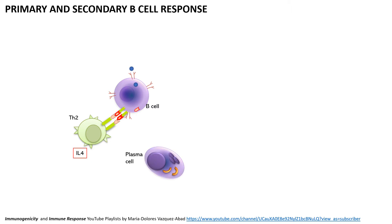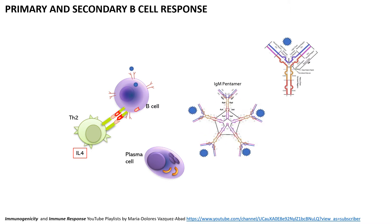Interleukin 4 is critical for the B-cell differentiation and maturation into plasma cell, which is the responsible cell that produces the antibodies — IgG, IgM, IgE — and all of these are antibodies that identify and recognize the original danger signal, either the allergen, the drug that's immunogenic, or another type of antigen.